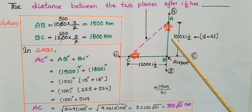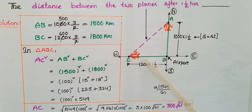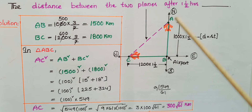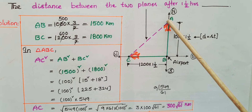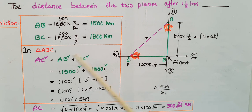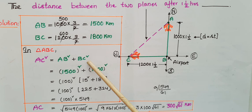ABC is a right triangle because the angle at B is 90 degrees. So we need to find AC. By Pythagoras theorem: AC² = AB² + BC².